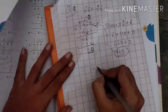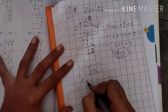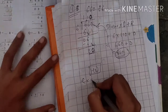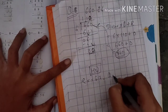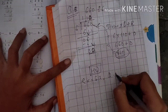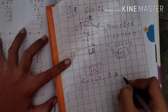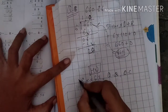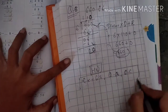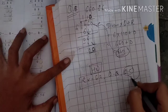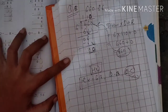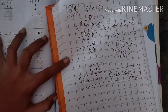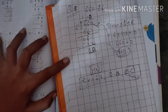Students, your homework is Exercise 6.7, question number b and question number c. Question c you have to do as classwork. You can also do it in your textbook. Take care, bye bye, thank you.